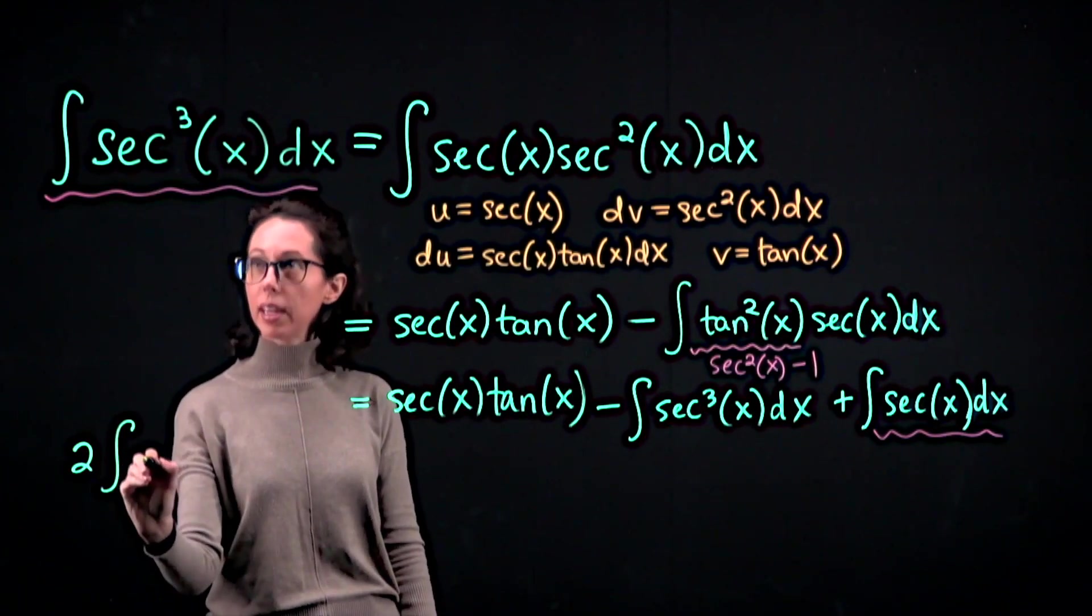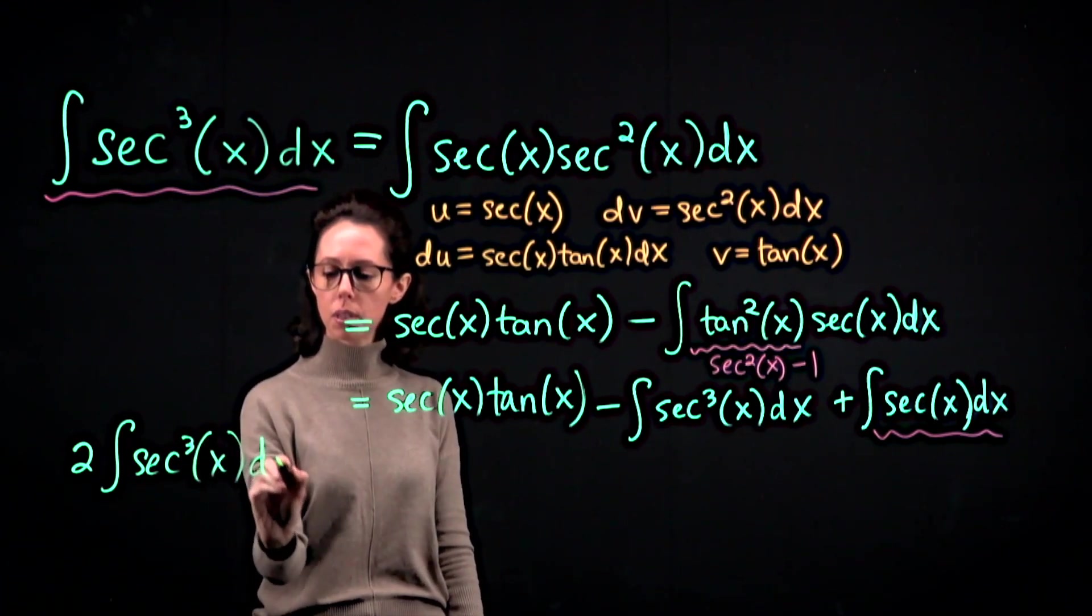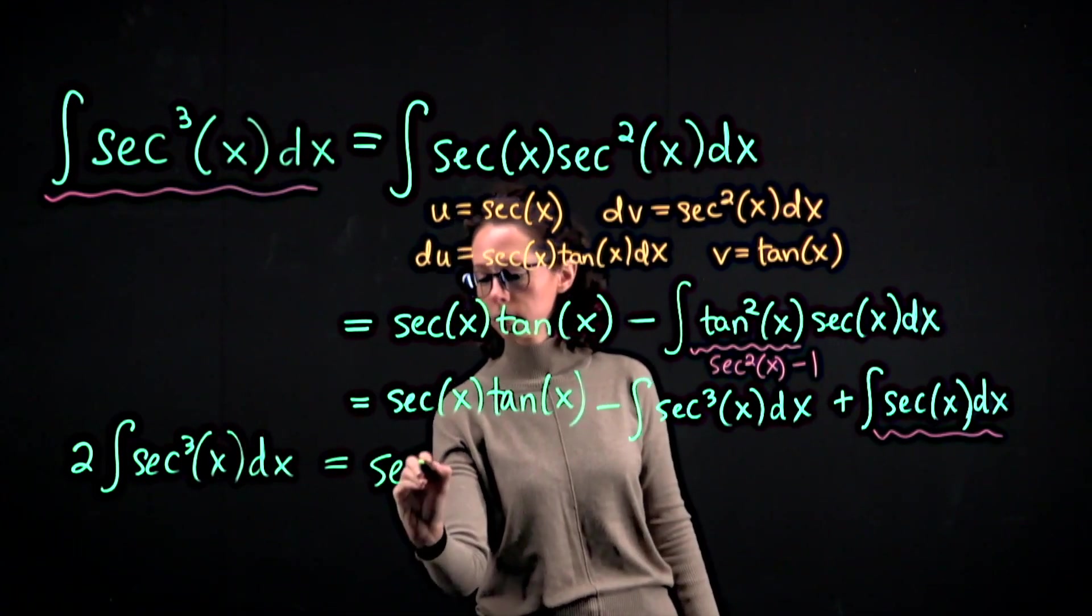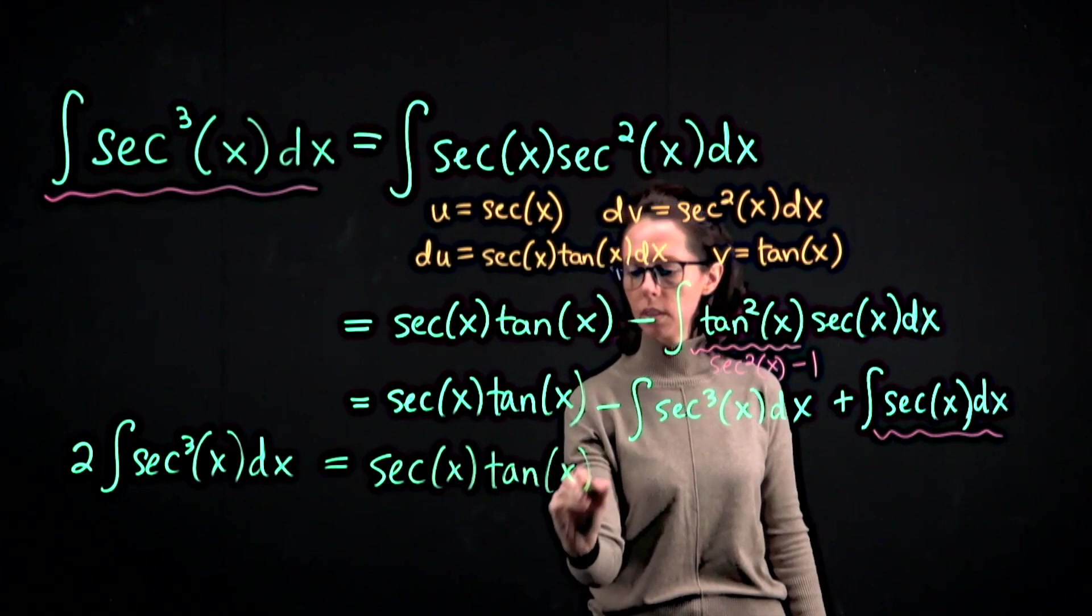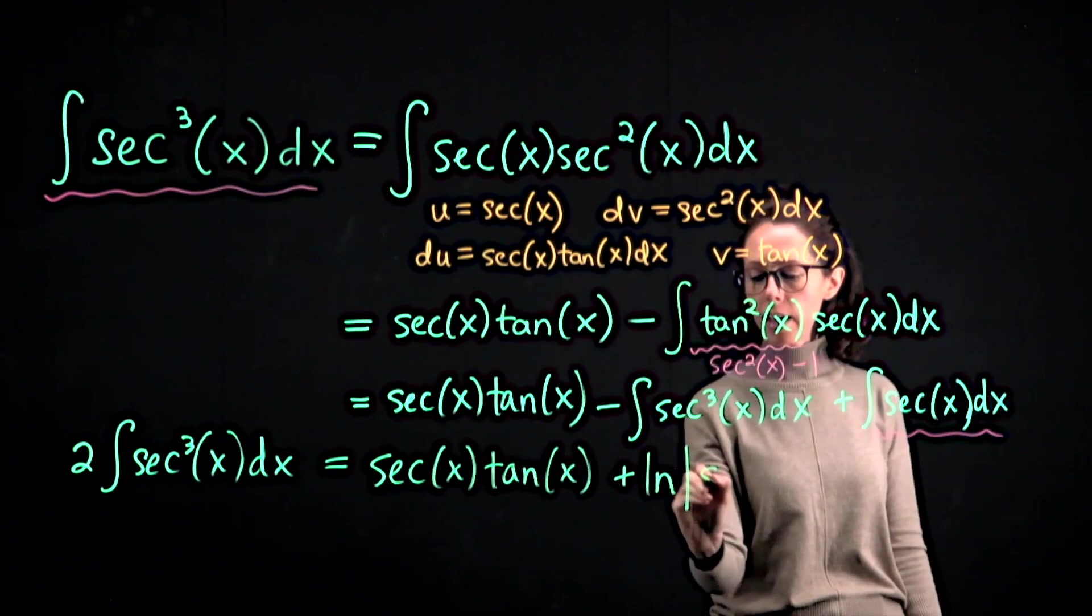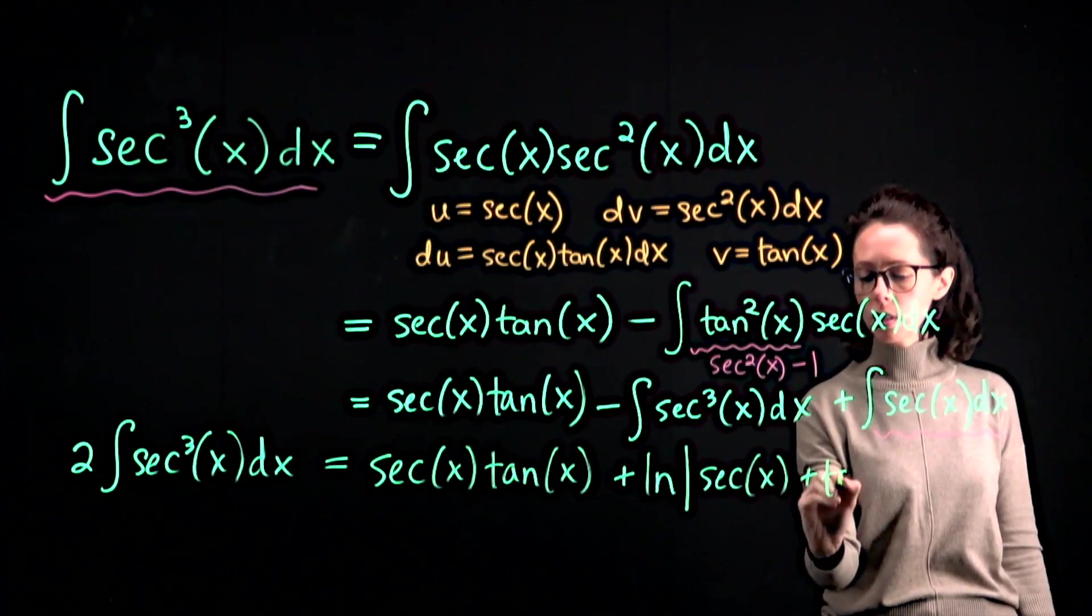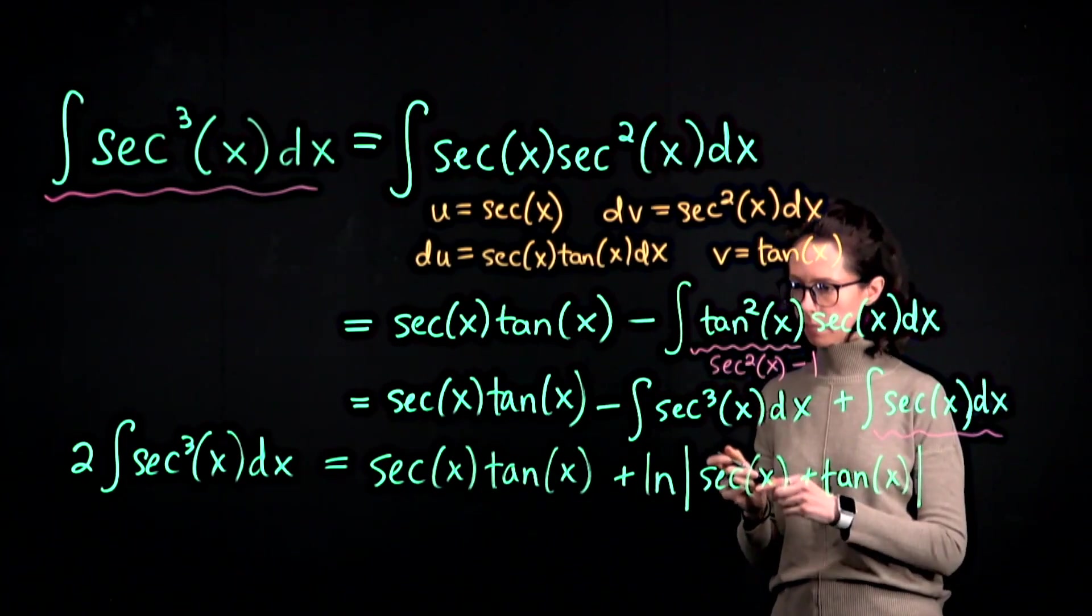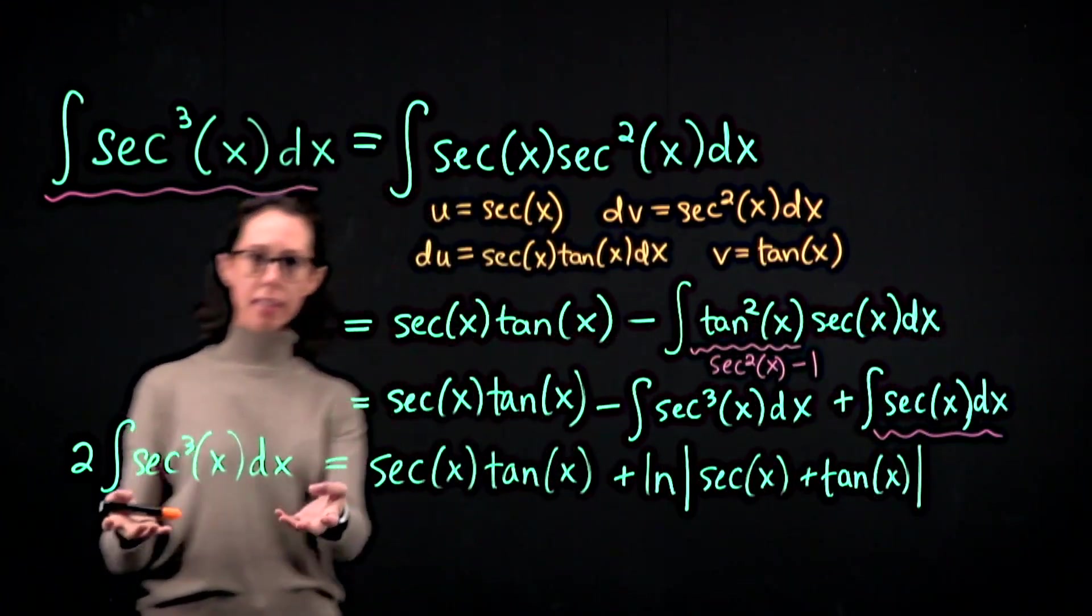...two copies of the antiderivative of the secant function cubed is equal to secant tangent, and then anti-differentiating this we get plus natural log of the absolute value of secant function plus the tangent function. And then at this point all we have to do is isolate this now.